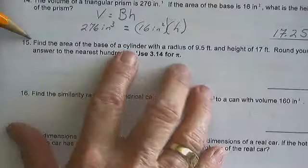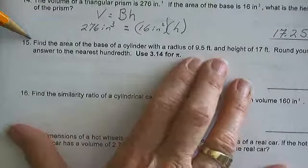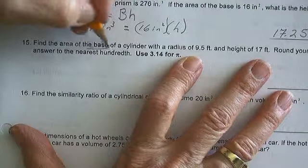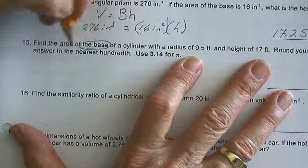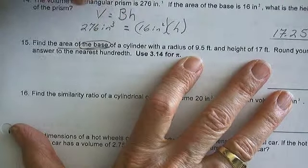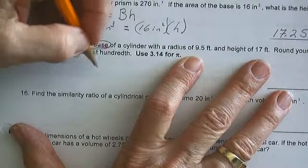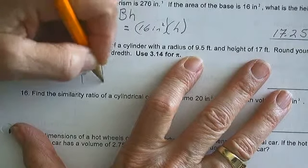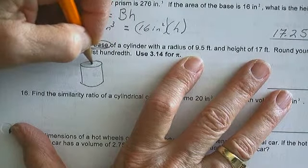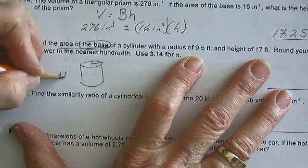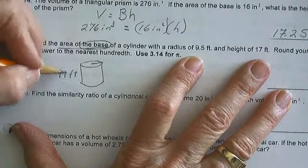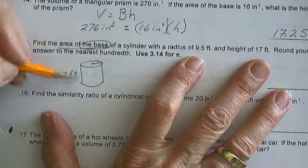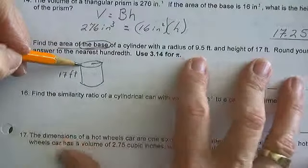Find the area of the base of a cylinder with a radius of 9.5 feet and a height of 17 feet. If we want the area of the base, we don't care how tall it is.